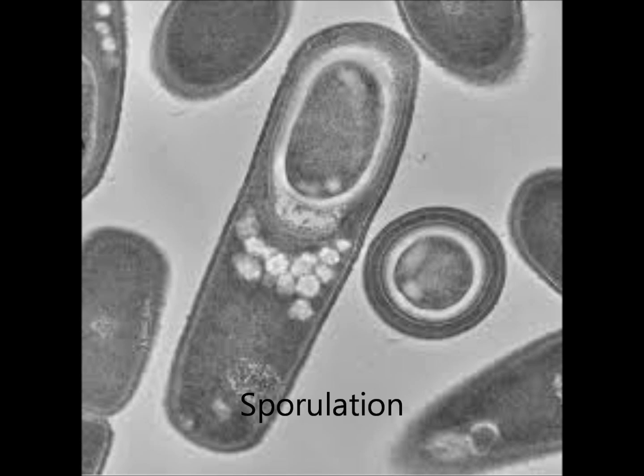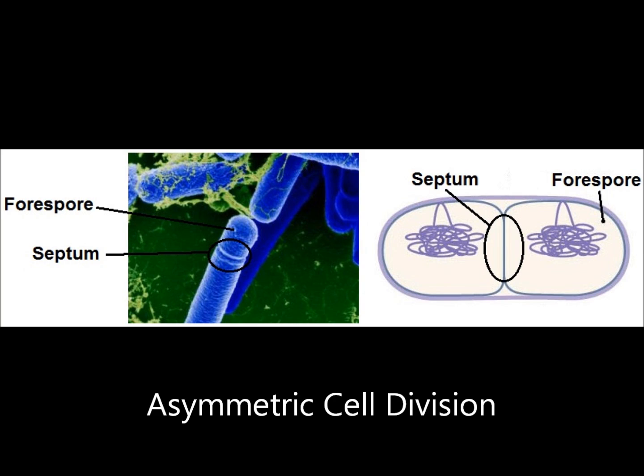Once conditions become unfavorable, the cell begins sporulation. The cell switches to the first step of sporulation, known as asymmetric cell division, due to an increase in the concentration of FTSZ and the synthesis of a sporulation-specific protein called SPO-IIE.